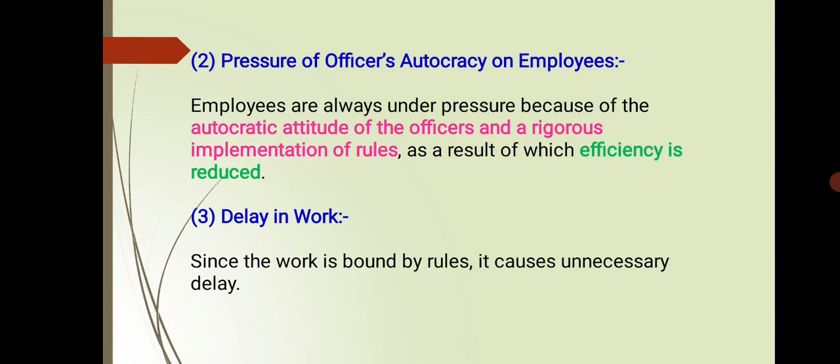The next disadvantage is delay in work. When you follow rules and regulations, it will take a lot of time and unnecessary delays will happen. Why? You have to follow proper hierarchy and proper sequence. Suppose you have to reach from person A to F — you have to follow A, B, C, D, E, F, going through four to five persons. Because it's a rule, you can't go direct. So in a formal organization, your work will be delayed, and the delay is unnecessary.